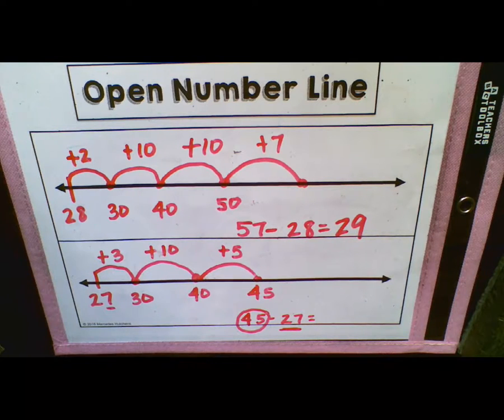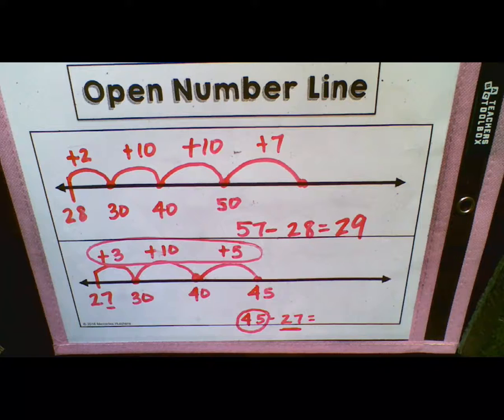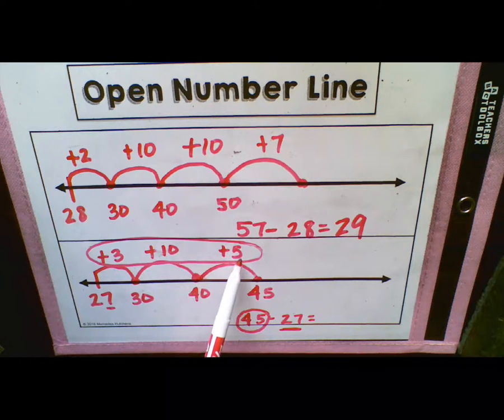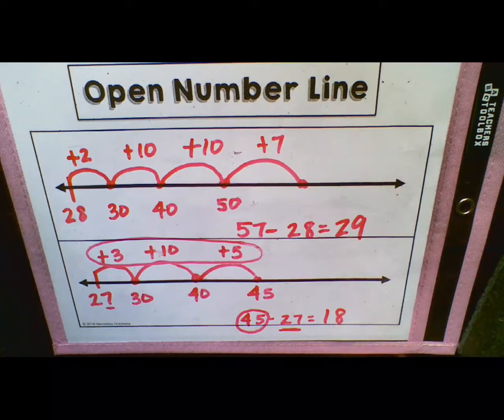Now we are not finished because now we need to take all of these numbers at the top and add them together. And that is going to give us our sum. So if we start with our 10 first, then we'll go to five. So 10 plus five is going to be 15. 15 plus three is going to give us 18. So our final answer is 18. 45 minus 27 is going to give us 18.